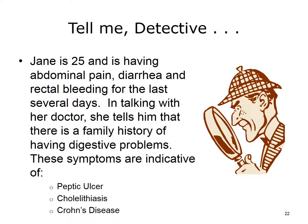Now that you know a great deal about the digestive system, can you make the correct diagnosis in the following case? Jane is 25 and is having abdominal pain, diarrhea, and rectal bleeding for the last several days. In talking with her doctor, she tells him that there is a family history of digestive problems. Are these symptoms indicative of a peptic ulcer, cholelithiasis or gallstones, or Crohn's disease?